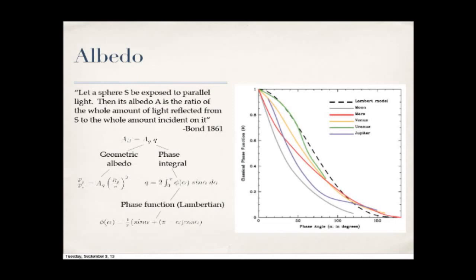With the phase curve and occultation, we can measure albedo. I'll use the bond albedo, defined back in 1861: what is the bolometric flux observed coming off the planet relative to the light hitting it — measured over all wavelengths and all incident angles, integrating from every viewing angle of the planet.